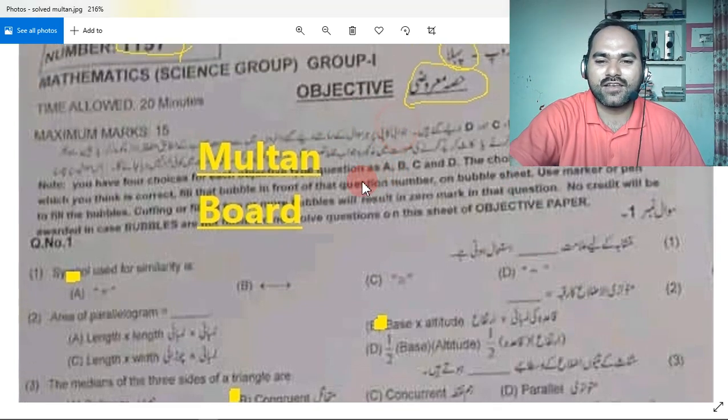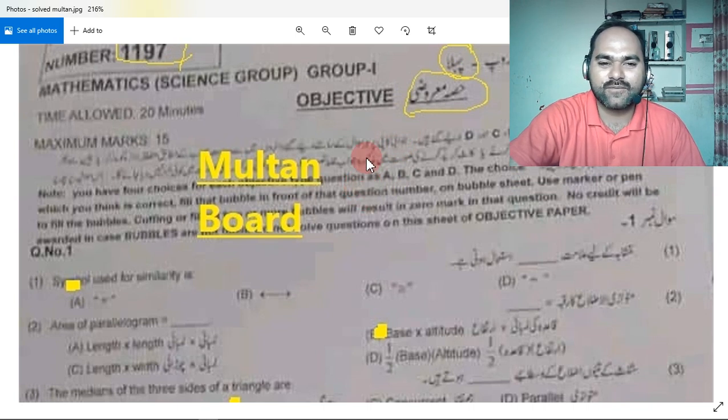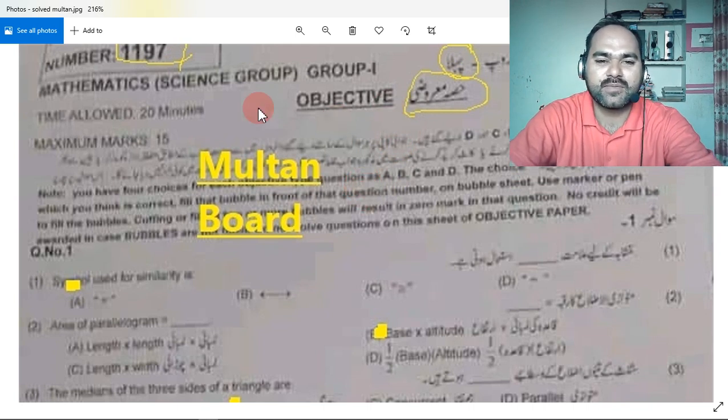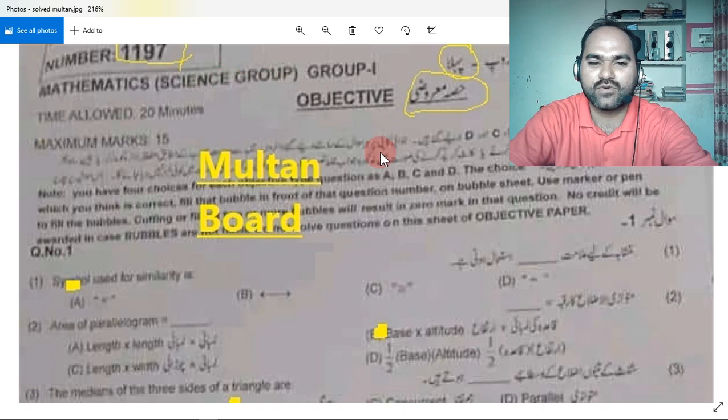Multan board ke Annhem class ke jo students hain and who have mathematics ka paper diya, science group ko dekh len, 11.97 code hai.